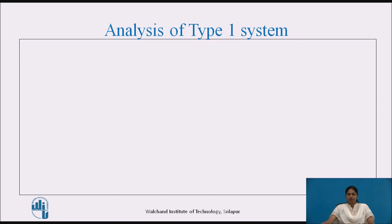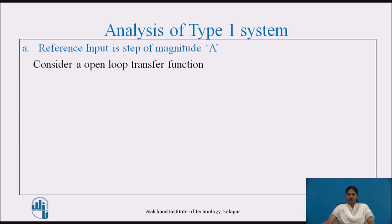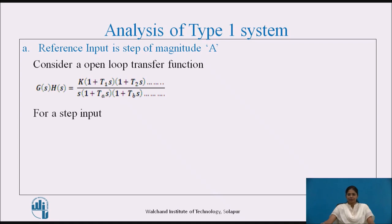Let's see the analysis of Type 1 system. Consider the first reference input of step of magnitude A. The open loop transfer function of a Type 1 system is G(S)H(S) equal to K into (1 + T1S)(1 + T2S) divided by S into (1 + T2S)(1 + TbS). For a step input, the error coefficient is given as Kp equal to limit S tends to 0 of G(S)H(S). After solving the limit, we get Kp equal to infinity.